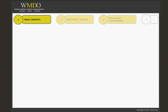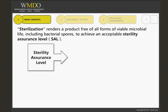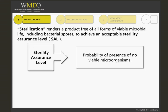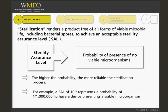Sterilization is about rendering a product free of viable microorganisms. Regarding sterilization, 'free' means a probability of having no viable microorganisms, and this probability is never 100%. For this reason, the standard introduces the notion of the Sterility Assurance Level, or SAL. The SAL of a sterilization process is the final probability of having a viable microorganism on a product. For example, an SAL of 10 to the minus sixth represents a probability of having one viable microorganism out of one million products treated.